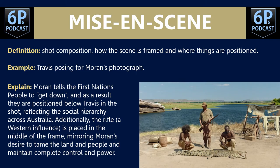Mise-en-scene, or shot composition, refers to how the scene is framed and where things are positioned. This is a great film technique because literally every single second of the film could be analysed using it. The example here is Travis posing for Moran's photograph. Moran tells the First Nations people to get down, and as a result they are positioned below Travis in the shot, reflecting the social hierarchy across Australia. Additionally, the rifle — a Western influence — is placed in the middle of the frame, mirroring Moran's desire to tame the land and people and maintain complete control and power. Note also the use of a quotation to really strengthen that analysis.